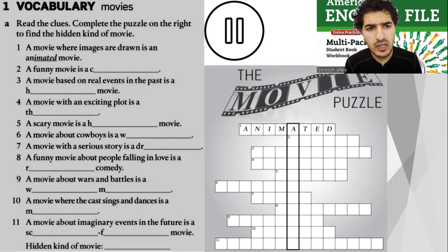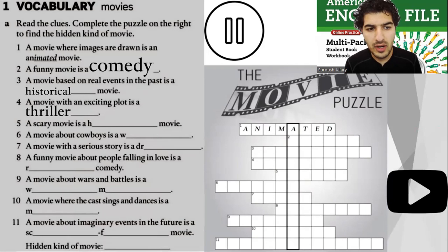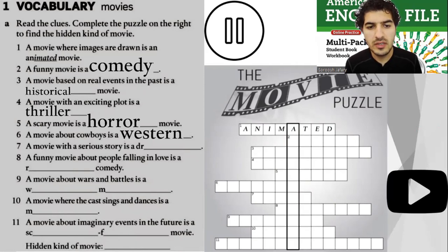Number two: a funny movie is a comedy. Number three: a movie based on real events in the past is a historical movie. Number four: a movie with an exciting plot is a thriller. Number five: a scary movie is a horror movie. Number six: a movie about cowboys is a western. Number seven: a movie with a serious story is a drama.